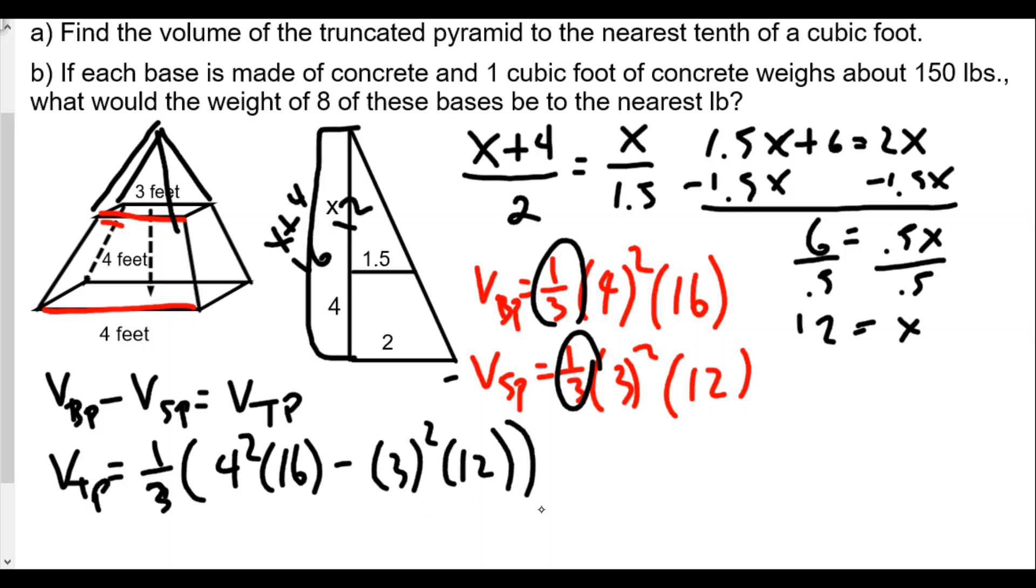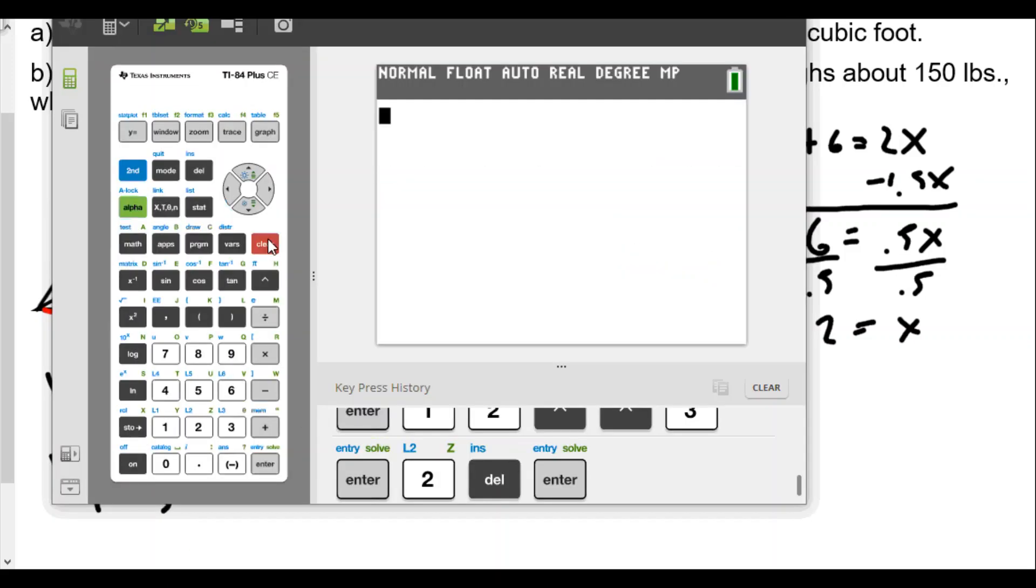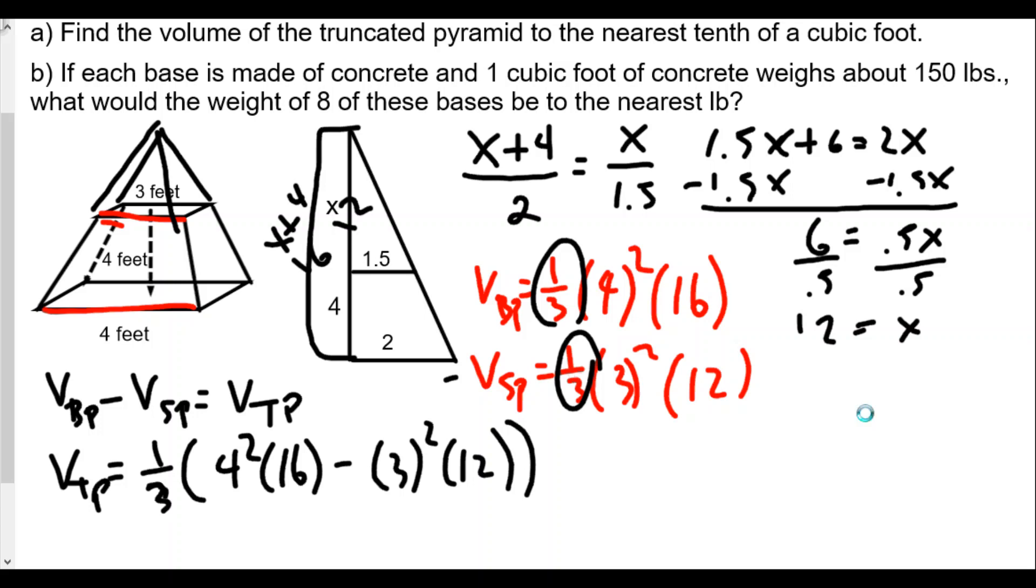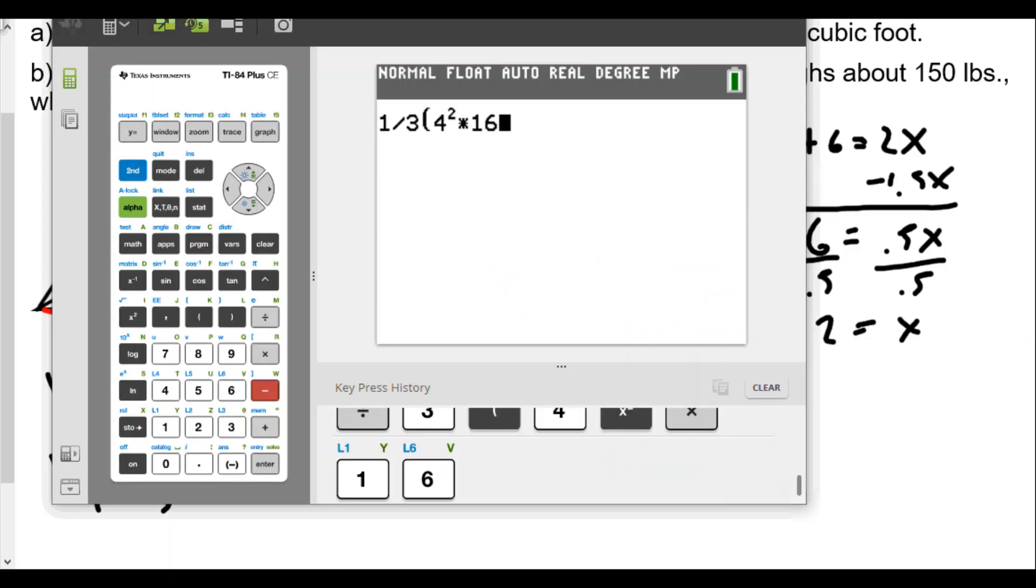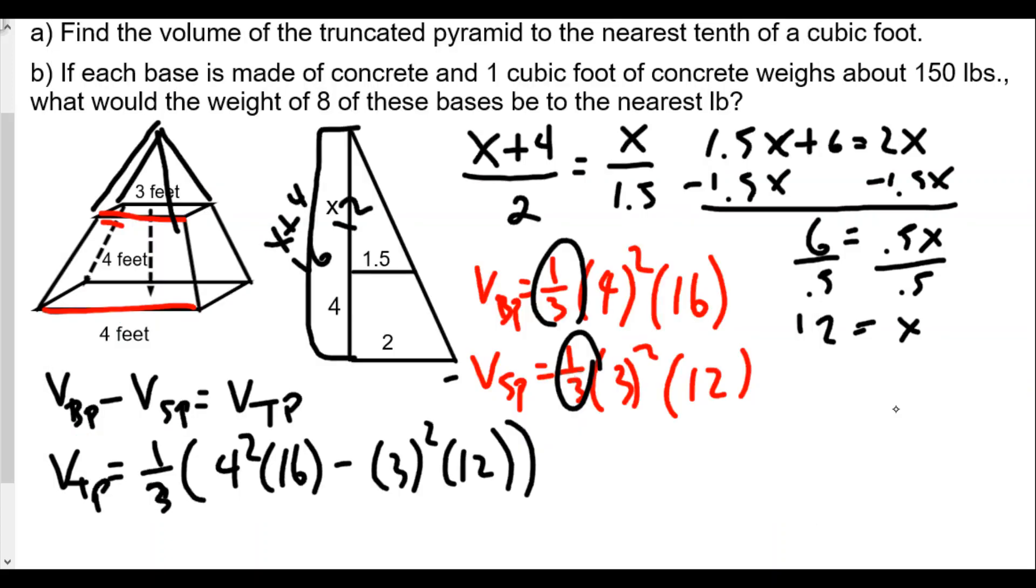Now we're going to take our calculator. We're going to do one-third times (4 squared times 16 minus 3 squared times 12). We're going to get a volume of 49.333, so 49 and a third. To the nearest tenth of a cubic foot, it's approximately 49.3 cubic feet.